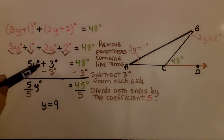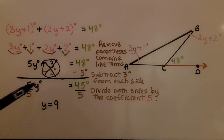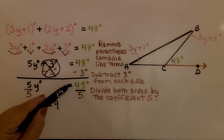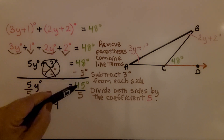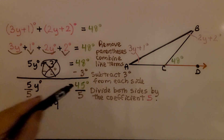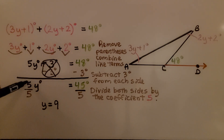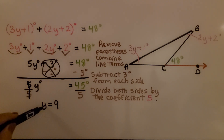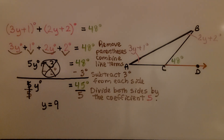So we have 5y plus 3 degrees set equal to 48 degrees. Since this is plus 3, we subtract 3 from both sides to create a zero pair and eliminate it. Now we have 5y degrees equal to 45 degrees. We divide both sides by the coefficient 5. Same numerator and denominator gives us 1y, and 45 divided by 5 is 9. So y is equal to 9.